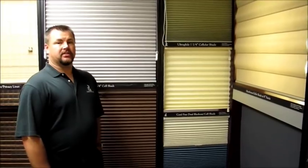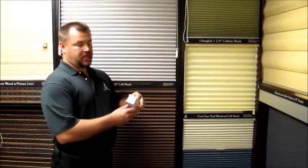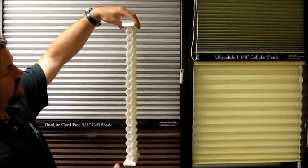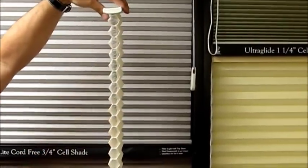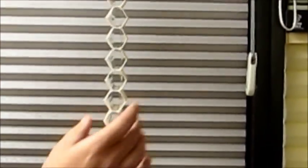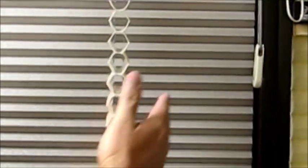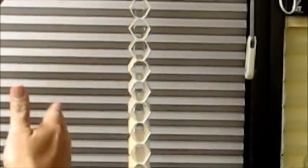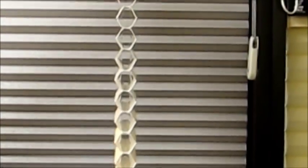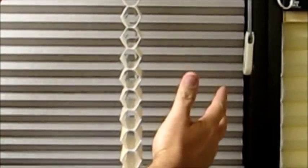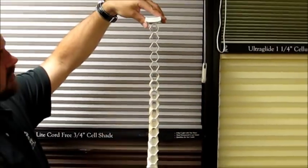The first thing I'd like to talk about is what is a cell shade. Here's a typical standard cell shade. It has an open-air design in the middle there which traps air. What this does is it makes it more difficult for energy to transfer from one side to the other. This allows it to keep the shade cooler in the winter and warmer in the summer.